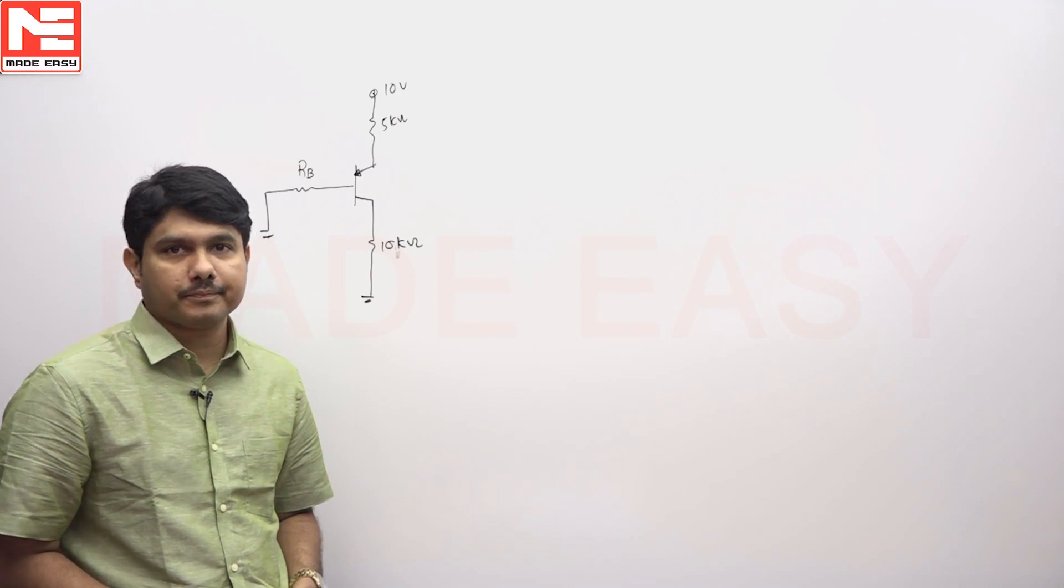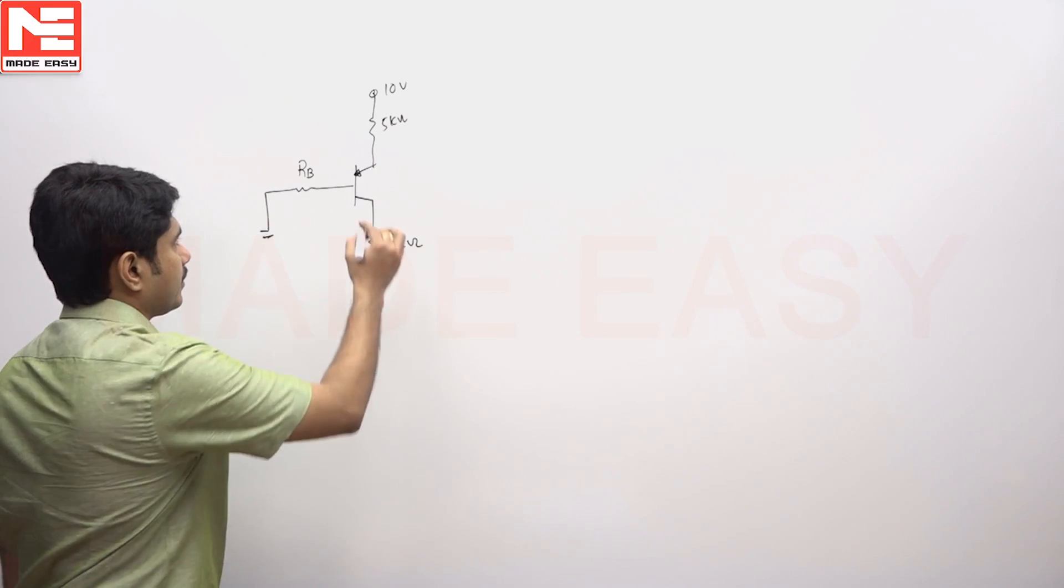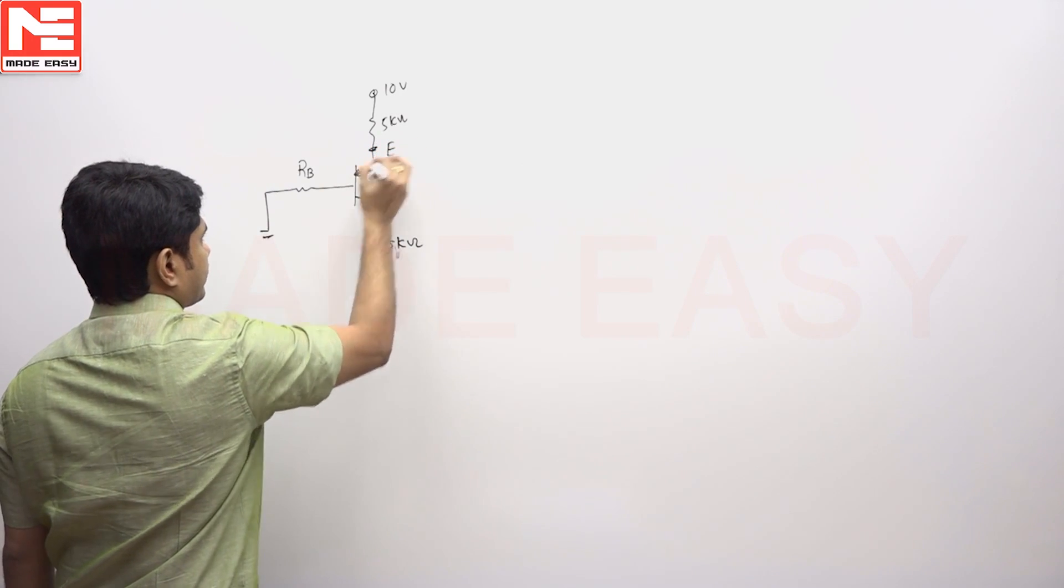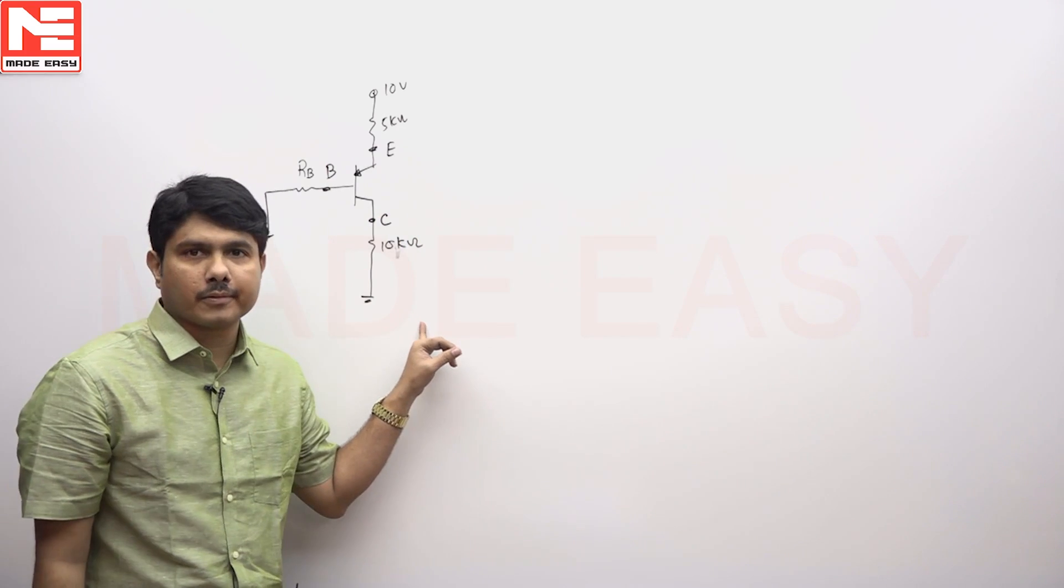This question is related to BJT problem. It is a PNP model where this is emitter, base position is here, collector. So collector point is in the bottom side now.